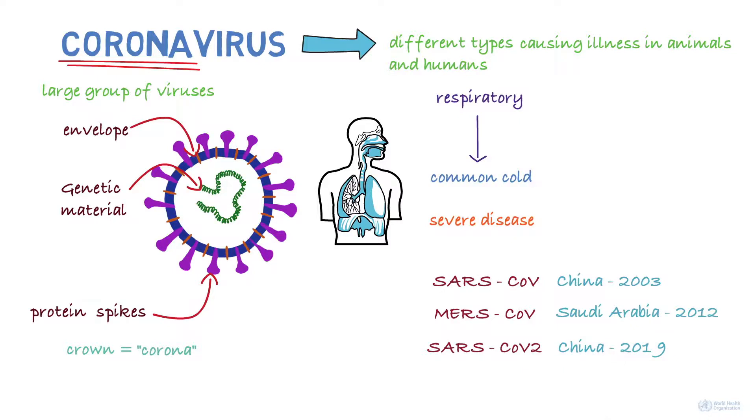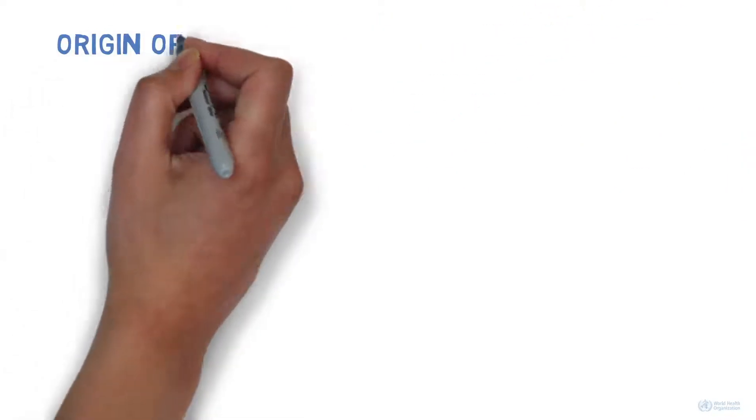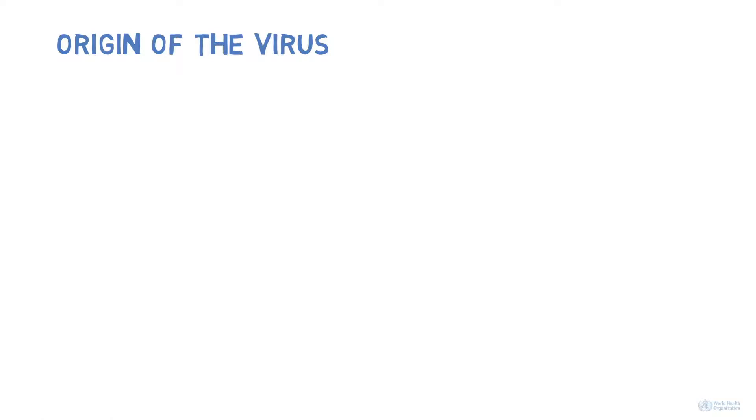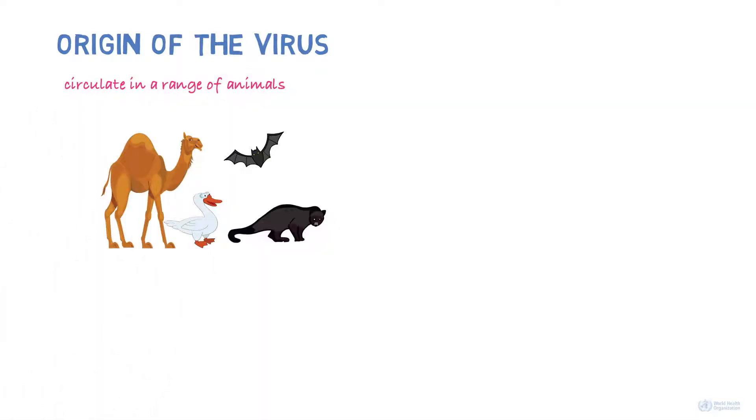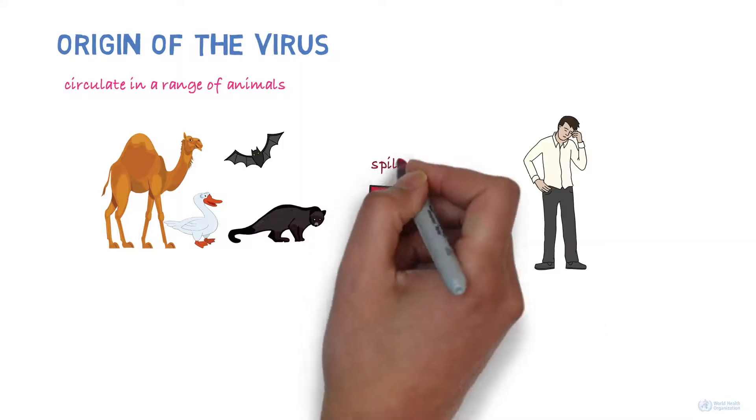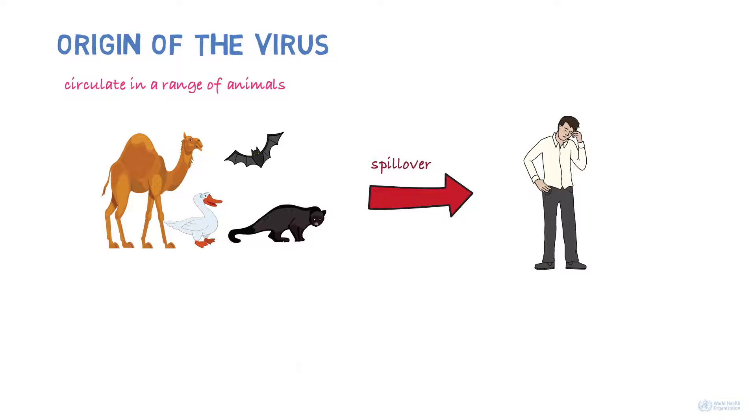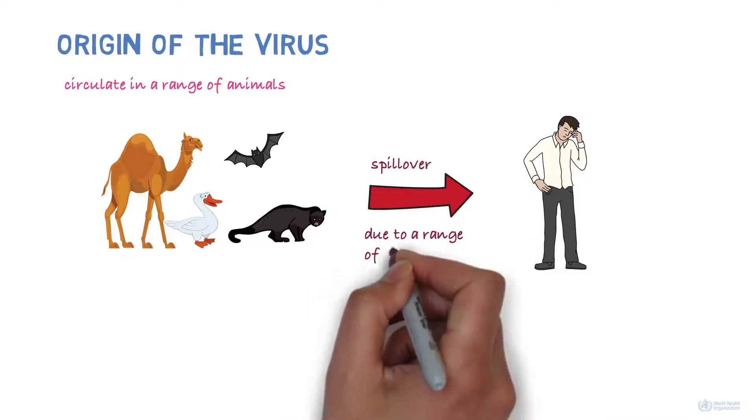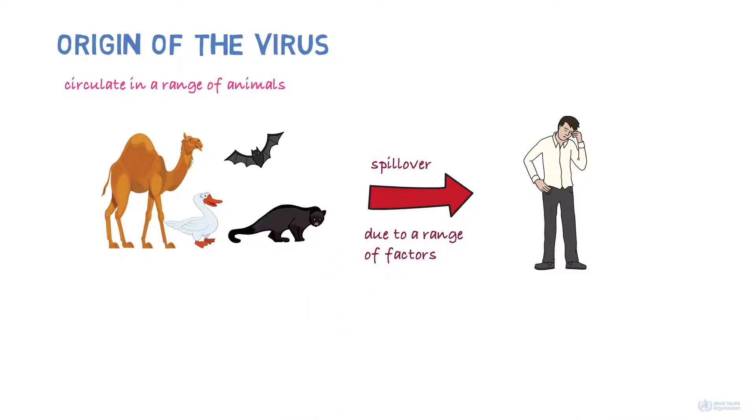So, where did this new virus come from? It's known that coronaviruses circulate in a range of animals. Sometimes, these viruses can make the jump from animals to humans. This is called a spillover and could be due to a range of factors, such as mutations in the virus or increased contact between humans and animals. For example, MERS-CoV is known to be transmitted from camels and SARS-CoV from civet cats.